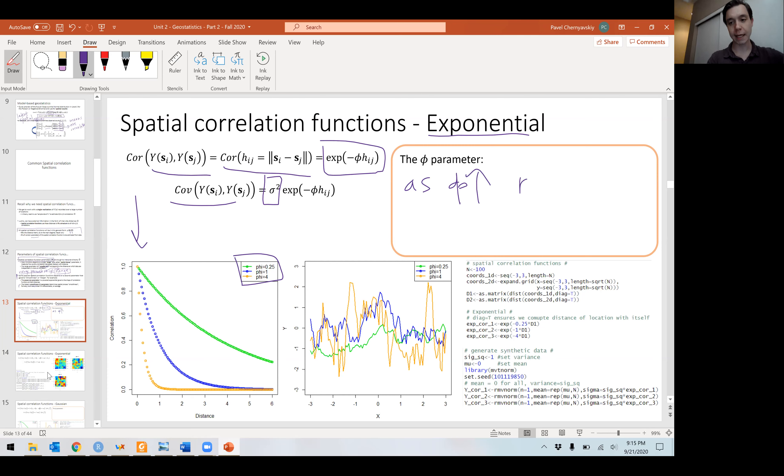So let's take a look at this plot. We have correlation on the y-axis, we have distance on the x-axis. So it's clear that as phi increases, the range decreases. Look at the blue curve and the orange curve. For the blue curve, the range is four. For the orange curve, the range is somewhere below one. For the green curve, the range occurs, it's greater than six, greater than the distance that I have up on the plot.